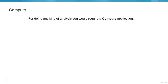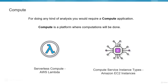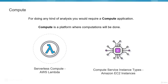For any kind of analysis, you need a compute platform where computations will be done. AWS offers two key services: AWS Lambda, a serverless compute architecture that provides a platform to run your code without managing any hardware — just write, deploy, and run your code; and Amazon EC2 instances, which are virtual machines in the cloud providing a wide variety of instance types to choose from based on your requirements.